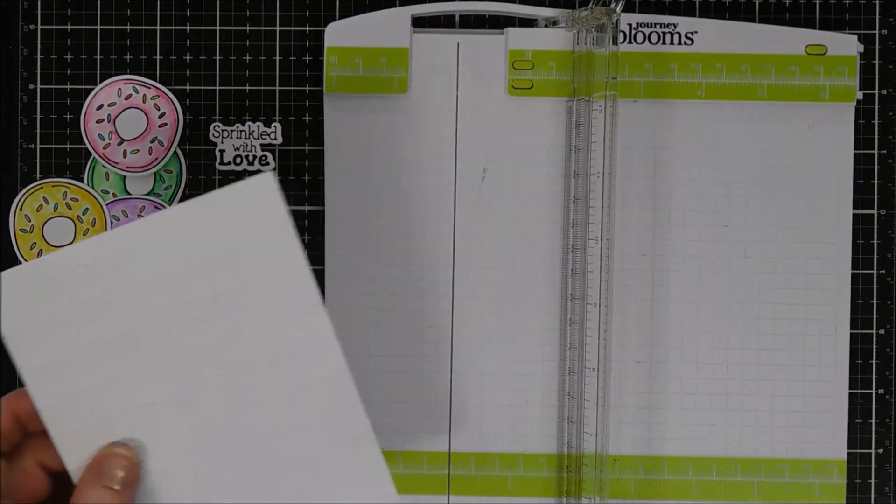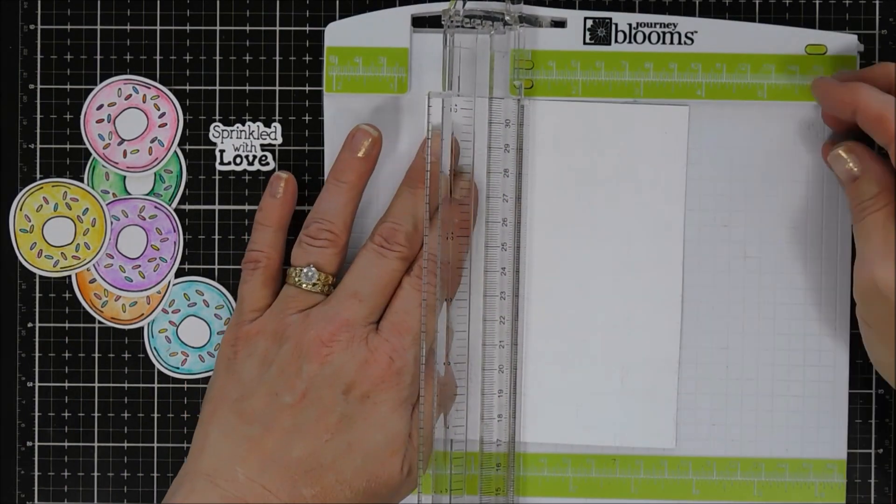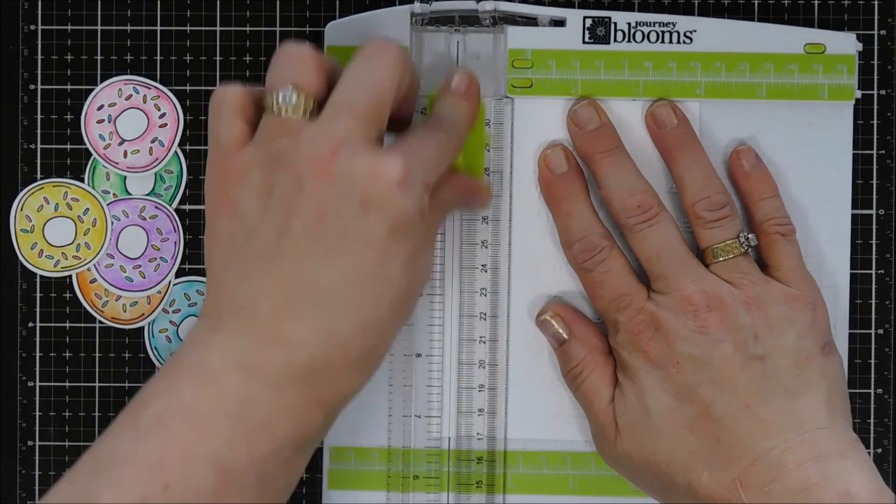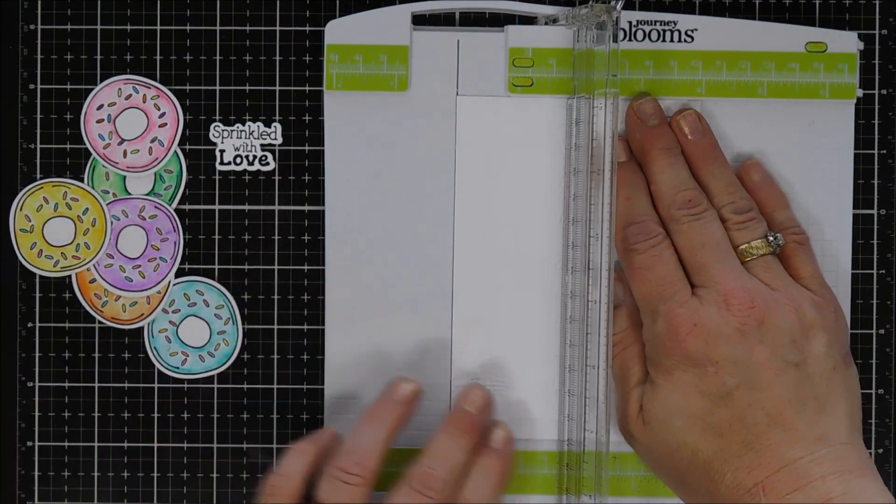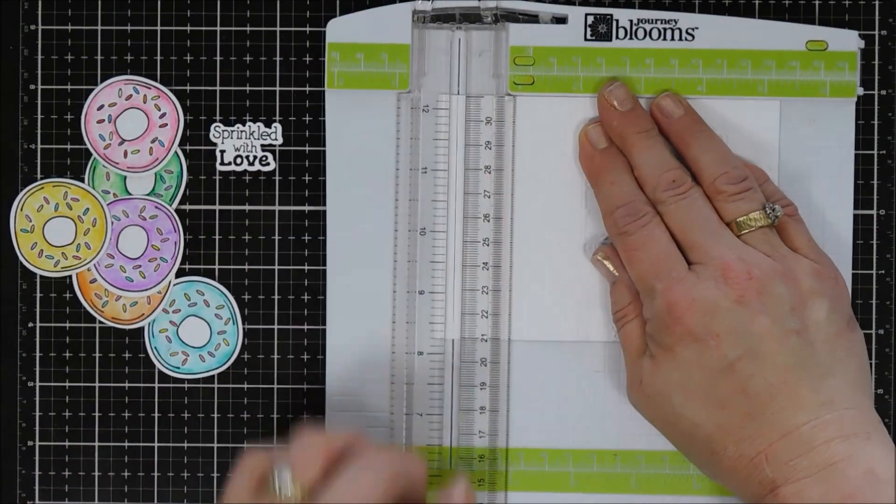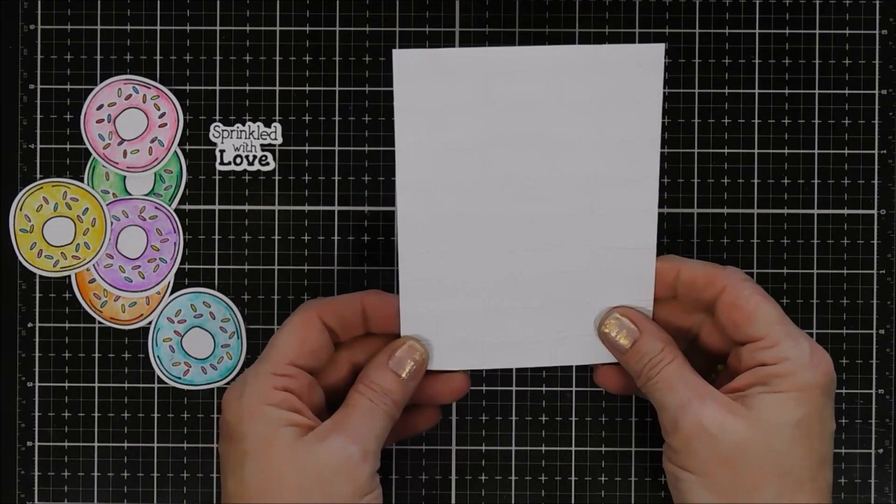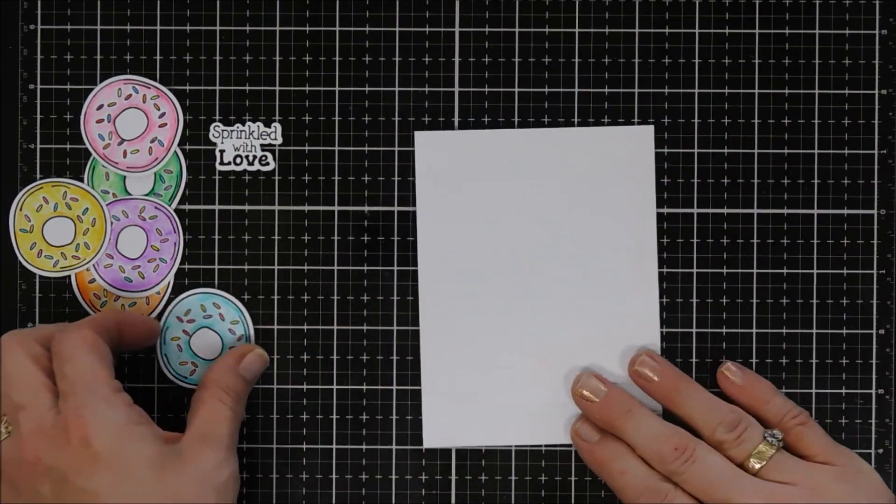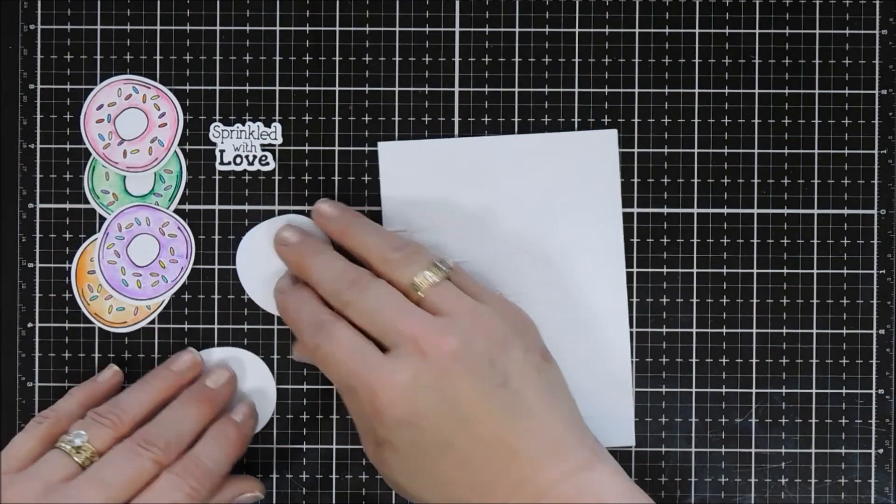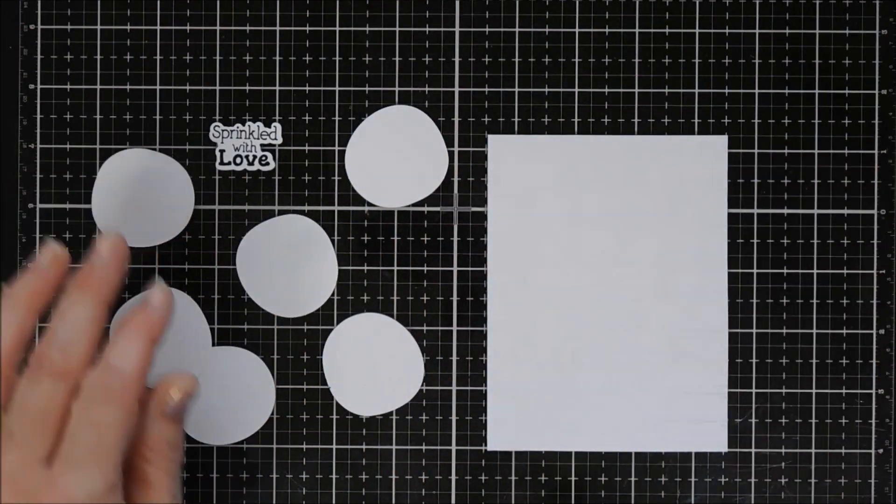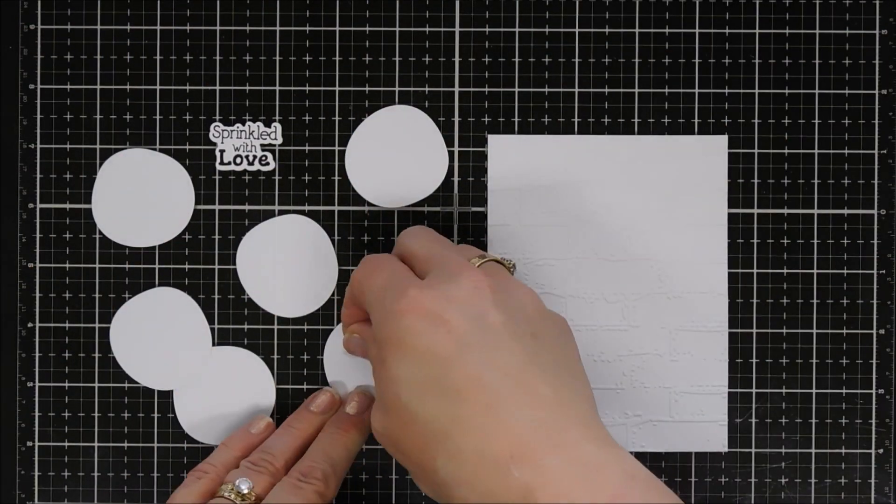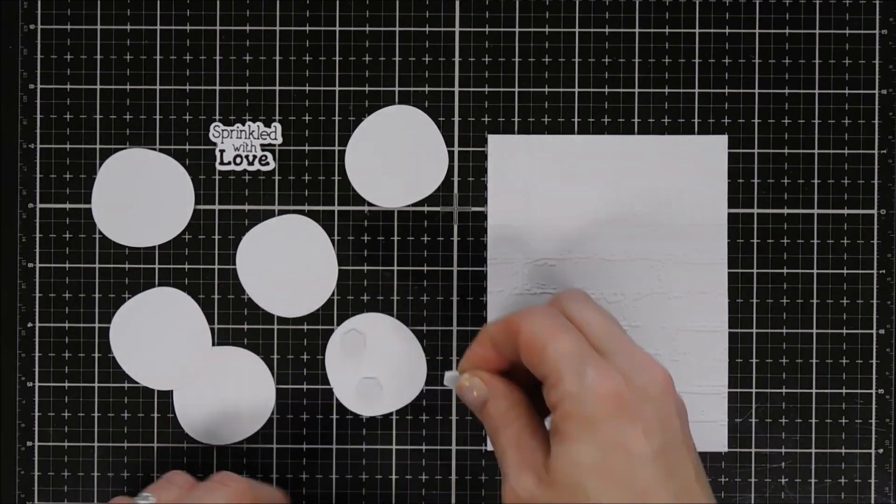My panel that I used to emboss was 4.25 by 5.5 inches and I'm just taking a quarter inch off the top and the side so it'll be slightly smaller than my card base. We're going to leave it white, but we're going to pop up each one of our donuts with some foam adhesive this way and we have a little bit of dimension.